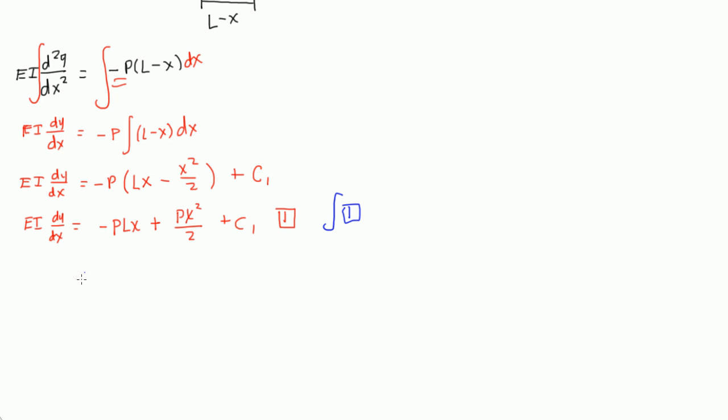So if we integrated this, on the left side, you'd have EI times y is equal to the integral of all three of these terms. Negative PLx dx plus the integral of Px²/2 dx plus the integral of this constant 1 dx. So EI y, the integral of PLx is, well, negative PL is a constant, so we can just integrate the x, and that'd be x²/2, so I'd end up with negative PLx²/2.